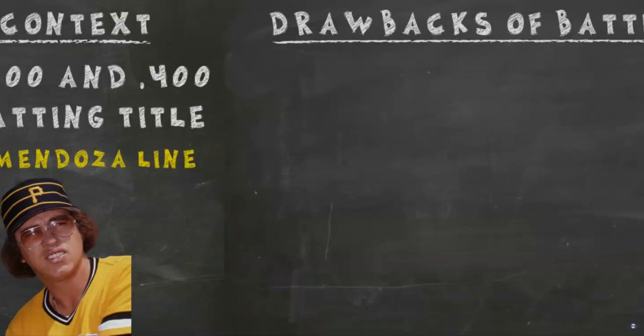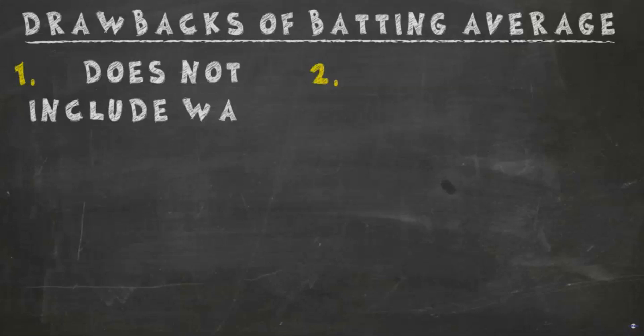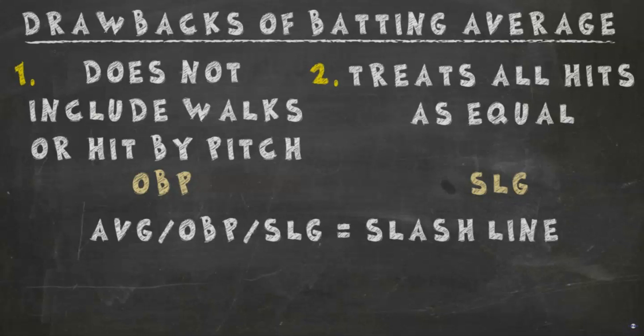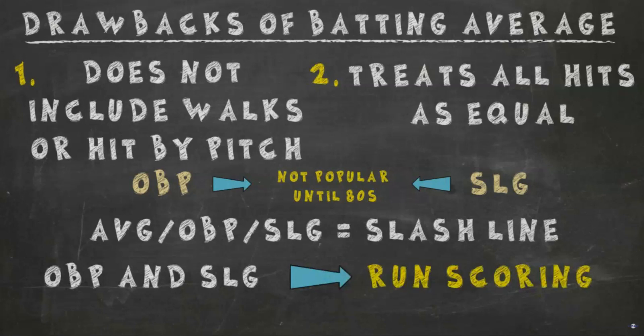Batting average doesn't hold the same weight today for two main reasons: one, it does not take walks and being hit by a pitch into account, and two, it counts all hits as equal. This led to the creation of on-base percentage and slugging percentage respectively, and all three stats together comprise what is known as the slash line. On-base percentage and slugging percentage weren't very popular until the 1980s, and with their popularization came the realization that batting average wasn't all that great on its own.